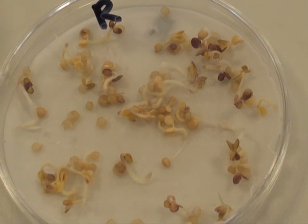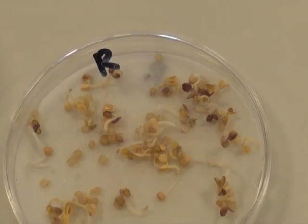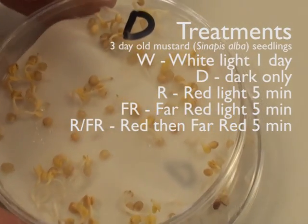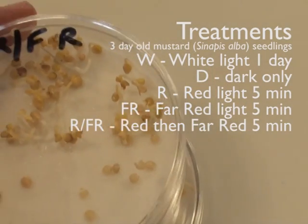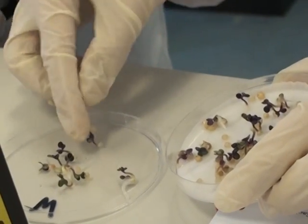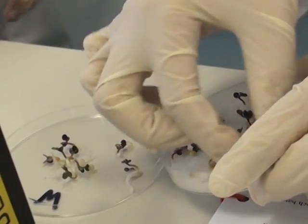Here we see seedlings of mustard which have been treated in white light or given a five-minute treatment in red light. Then we have others that have had treatment with far red light, just in dark, or with red followed by far red. Different light treatments with different qualities or colors of light.